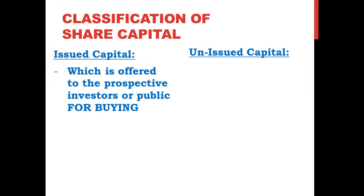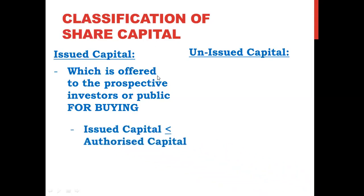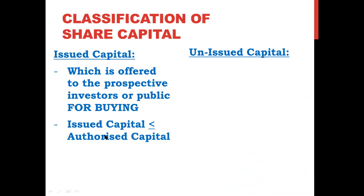Issued capital is that capital which is offered to the prospective investors or public for buying. So out of that 10 lakhs — out of that 1 lakh equity shares — whatever shares you offer to the public for buying are called issued shares. The key word here is 'offered.' Issued capital may be less than or equal to the authorized capital. That means you can issue the entire 1 lakh equity shares or less than 1 lakh — you cannot issue more than the authorized capital.